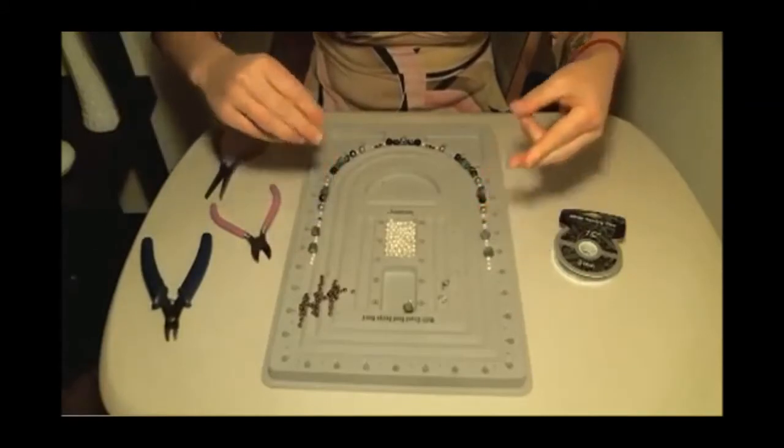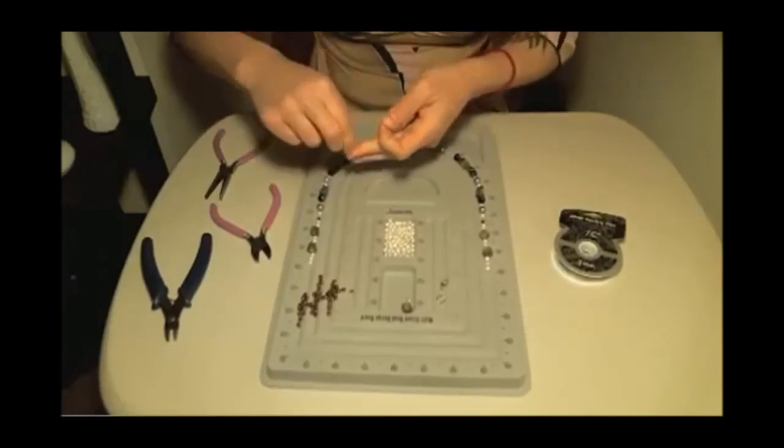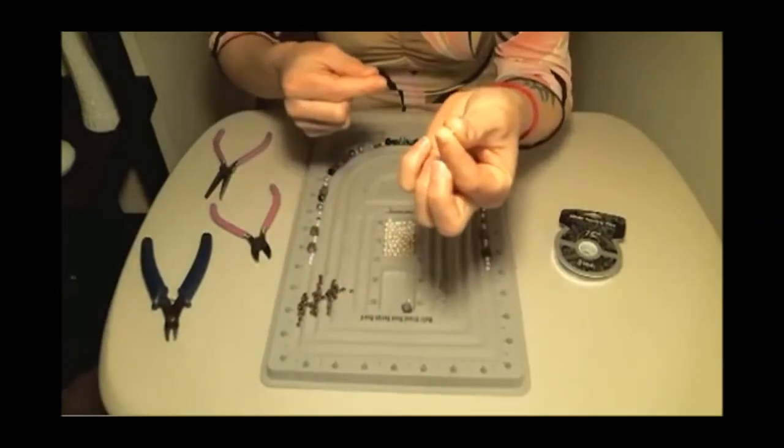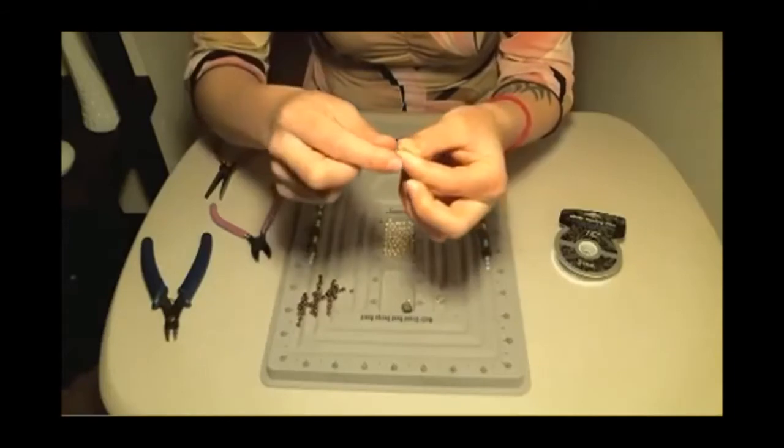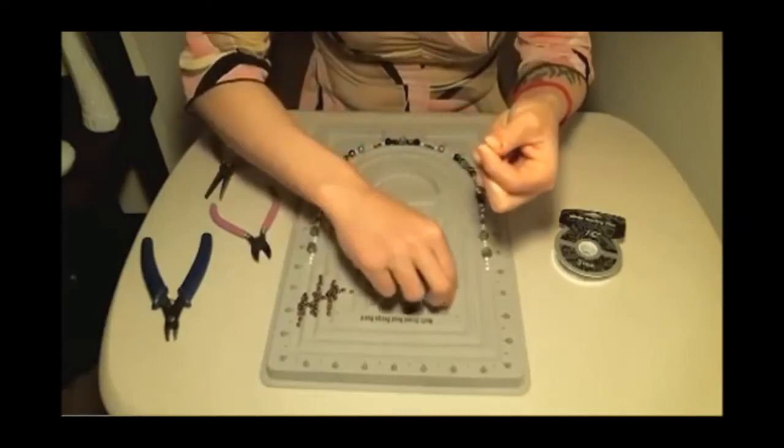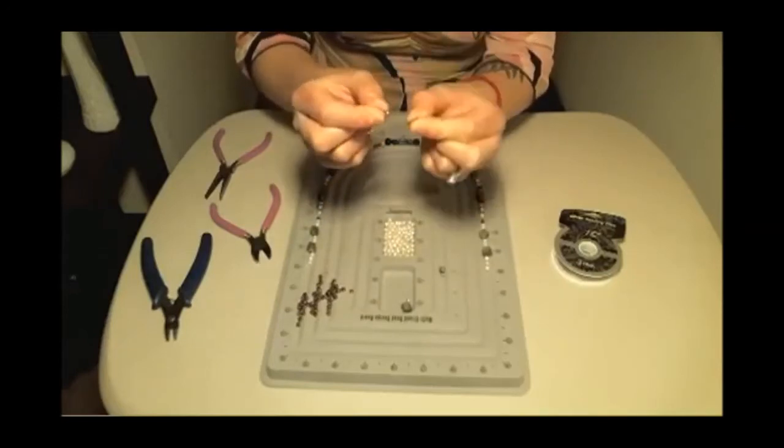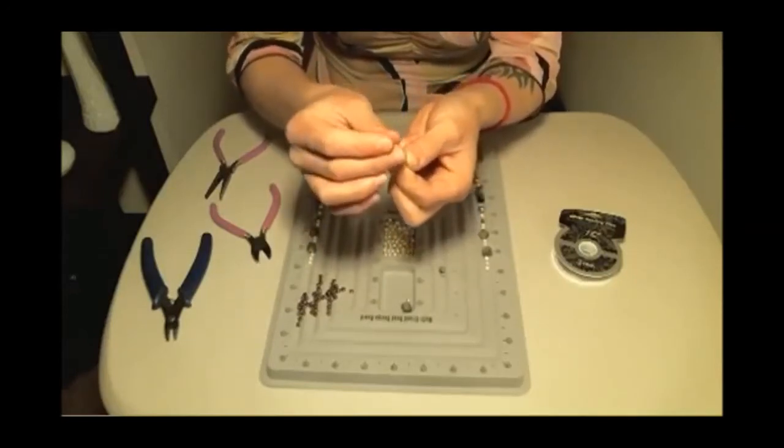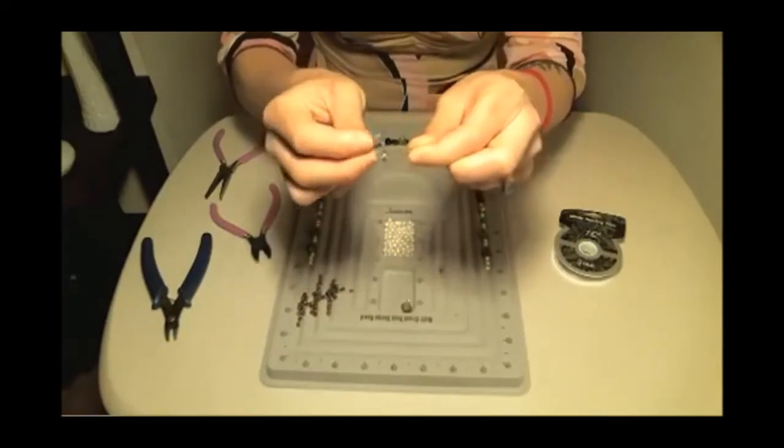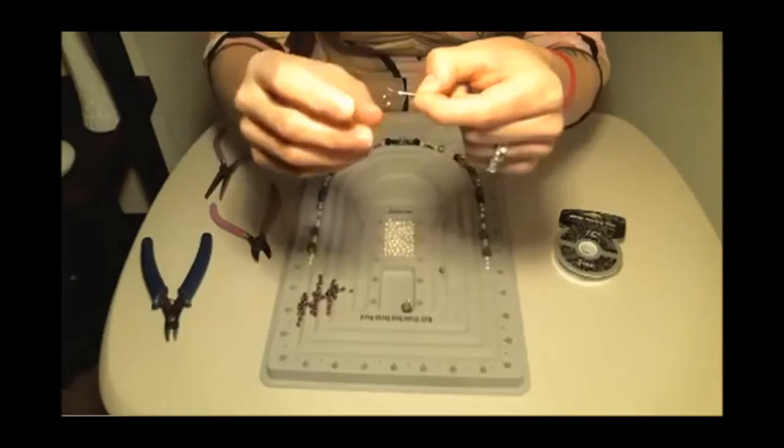Now I'm going to take one of my crimp beads and I'm just going to put it right on the end of my wire. And then I'm just going to hold it with my fingers so that it stays in place. You can put your lobster clasp or your jump ring on first, but I'm going to just go ahead and put my jump ring on or my split ring. And then you're going to have it hanging there. You're going to take the end of the wire and wrap it over and pass it right back through the crimp bead so that it's looped. It's looped like that.